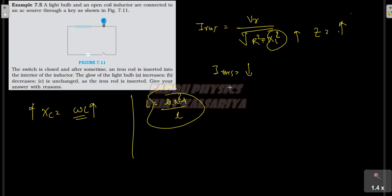So we know that the intensity of the bulb is proportional to current. So what is the answer? It will decrease.